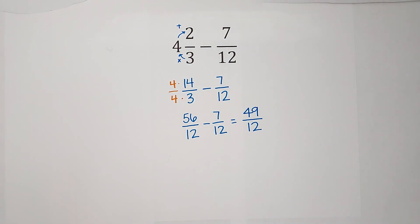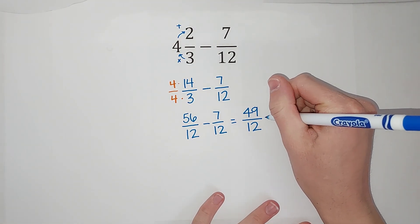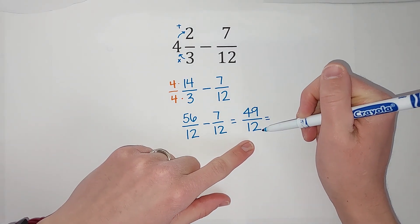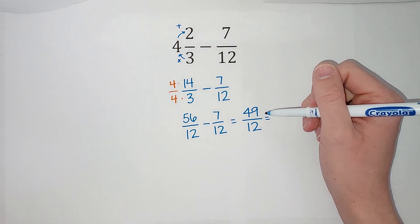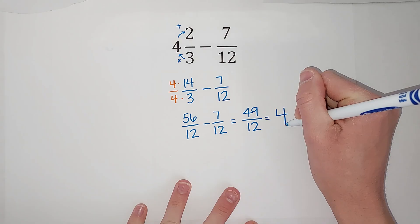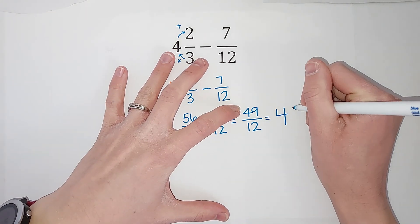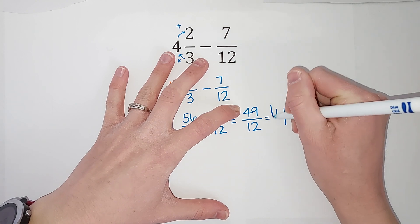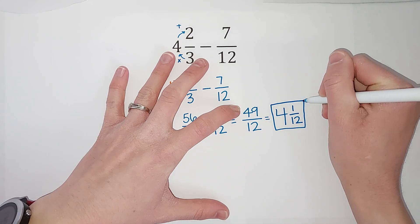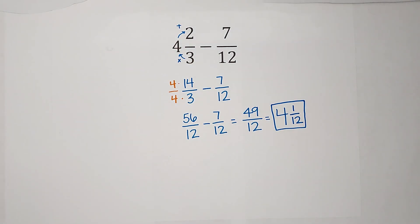That is one version of my answer, but most likely your teacher will probably want it back as a mixed number. So how do I turn that back into a mixed number? I think: how many times does 12 go into 49? It goes in four times — 12 times 4 is 48. It goes in four times, but it's 48, not 49, which means there's one left over and we are still over 12. So that is my answer: 4 and 2 thirds minus 7 twelfths gives me 4 and 1 twelfth.